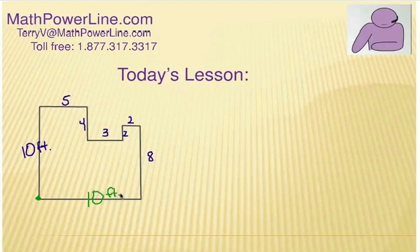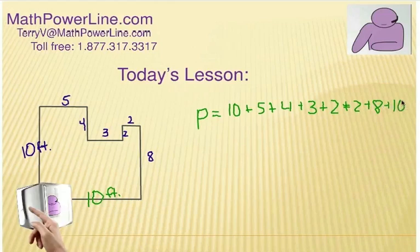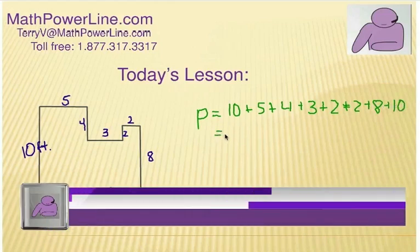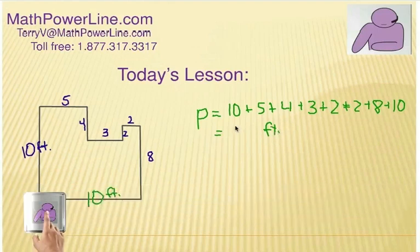Even though it's not marked, we can figure it out. So perimeter — usually we use the letter P. It's going to be ten plus five plus four plus three plus two plus two plus eight, and then finally plus the last ten. The total distance all the way around in feet should be forty-four feet.